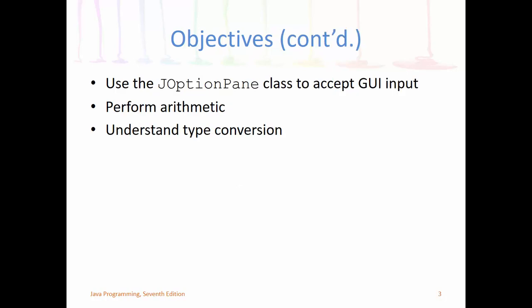We'll be looking at the JOptionPane class — one of the graphical components you can use to do graphical programming in Java. Java is going through a transformation: moving from the old GUI approach to a new one. JOptionPane is part of the Swing/AWT GUI programming tools. The modern approach is JavaFX, which renders natively to the Windows environment, looks much better, and has more powerful tools.